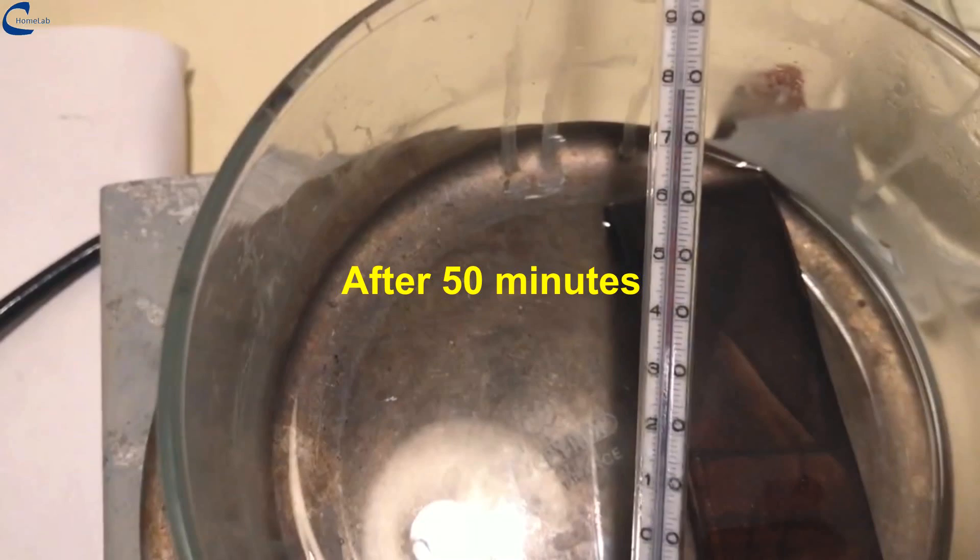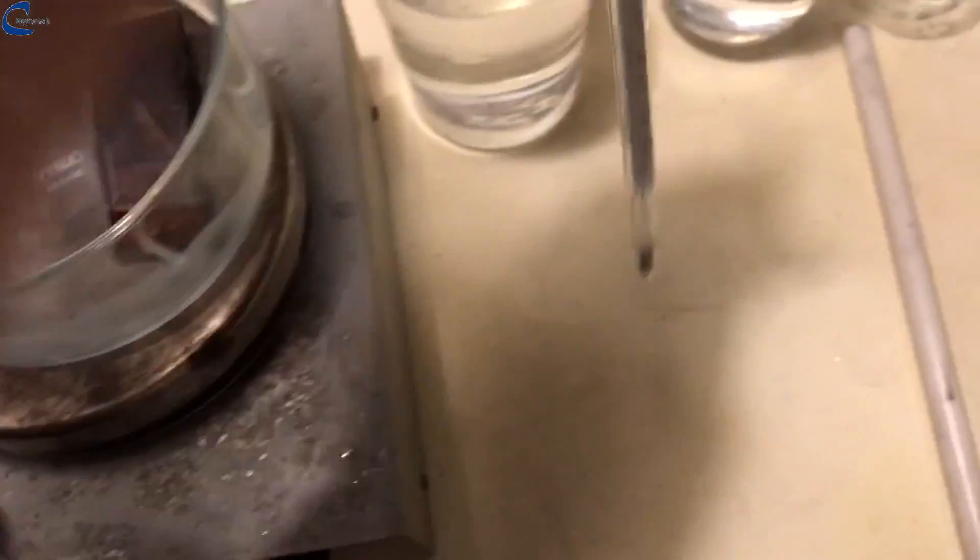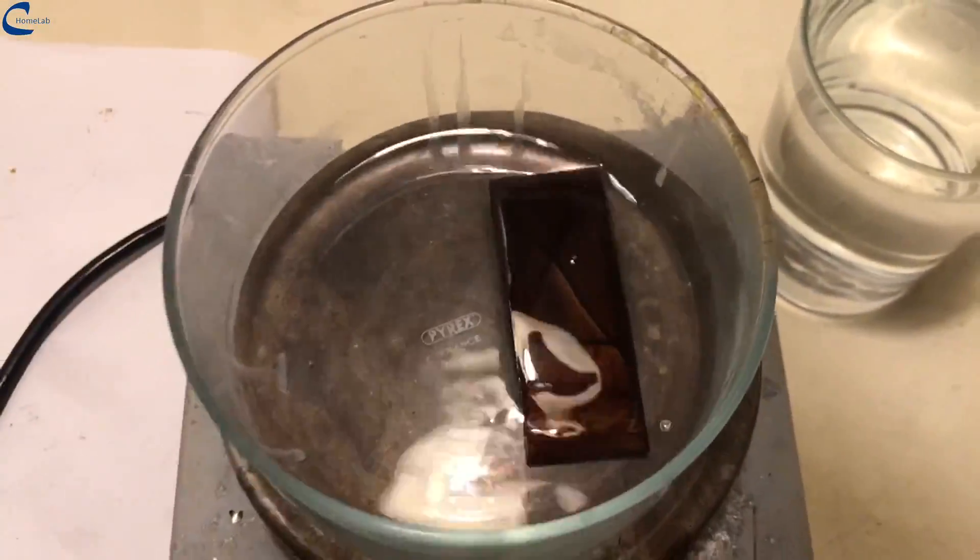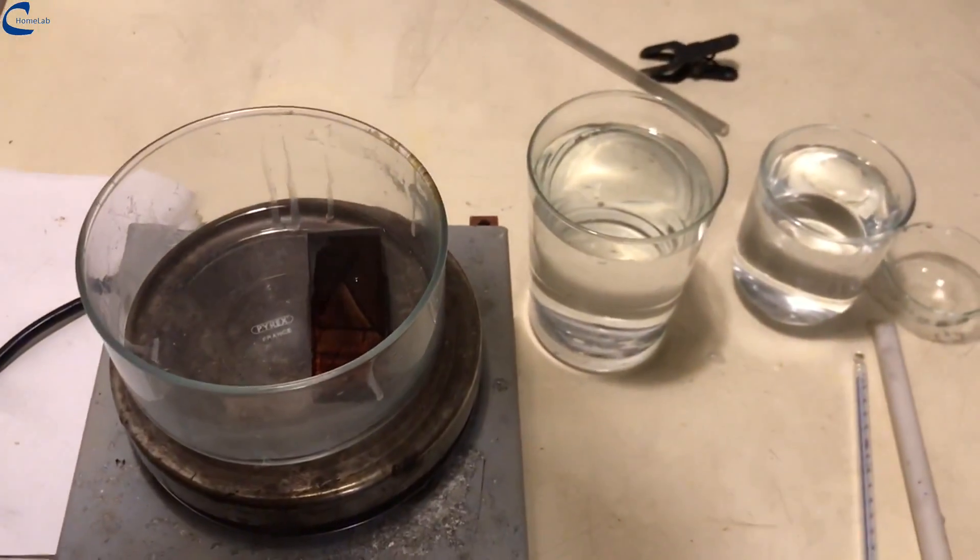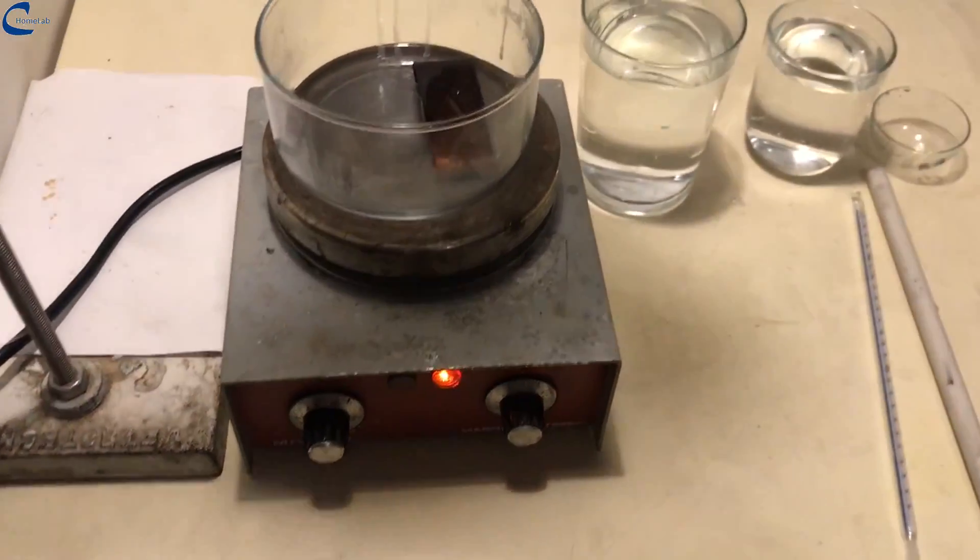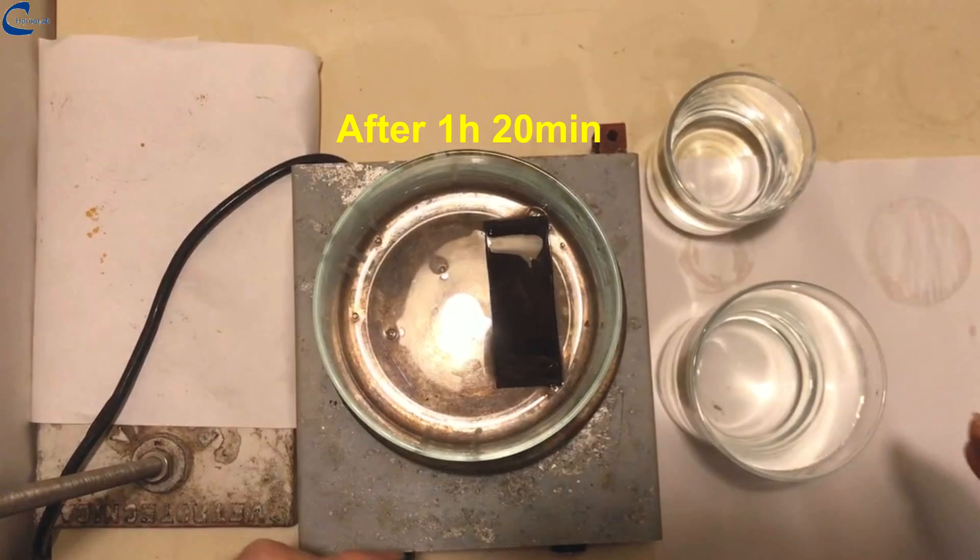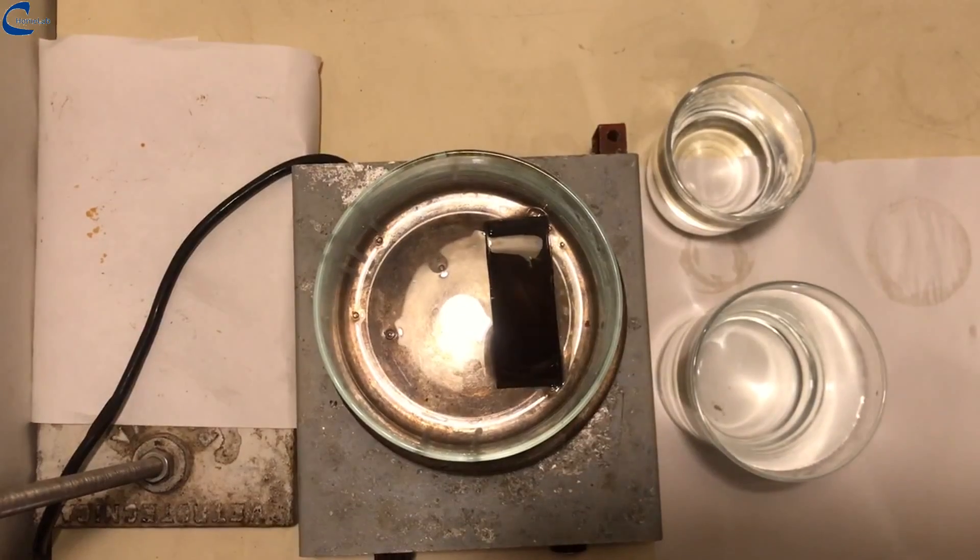After 50 minutes the copper begins to blacken. The temperature of the solution is 80 degrees centigrade. Throughout the operation, the level of the liquid that decreases due to evaporation must be kept fairly constant, adding distilled water when necessary. After 1 hour and 20 minutes the copper is completely oxidized.